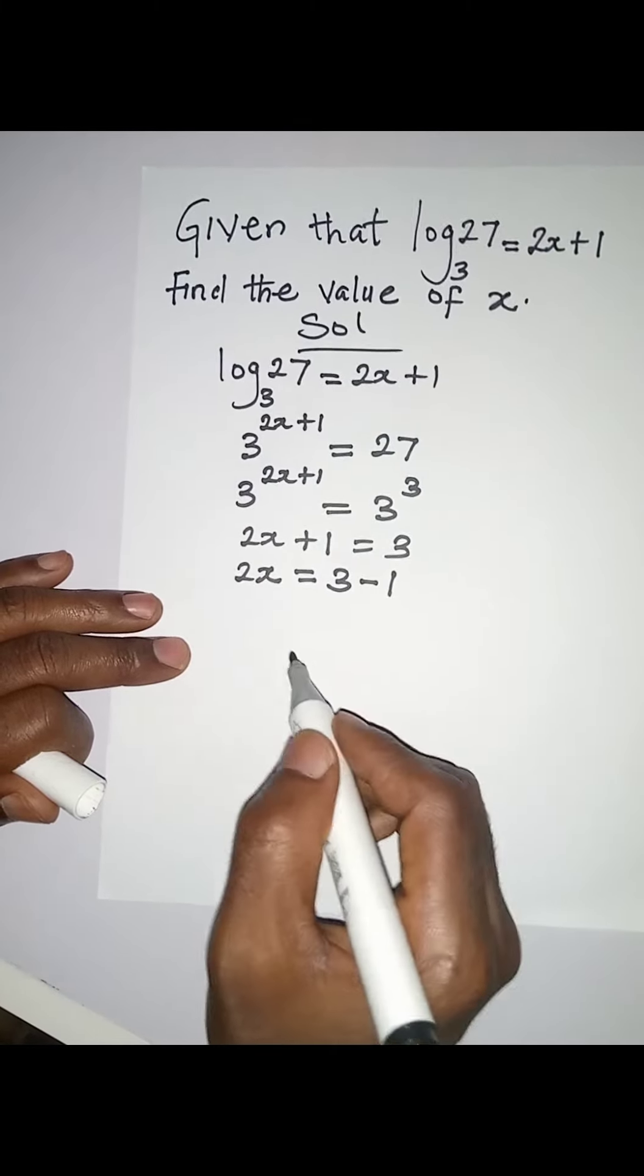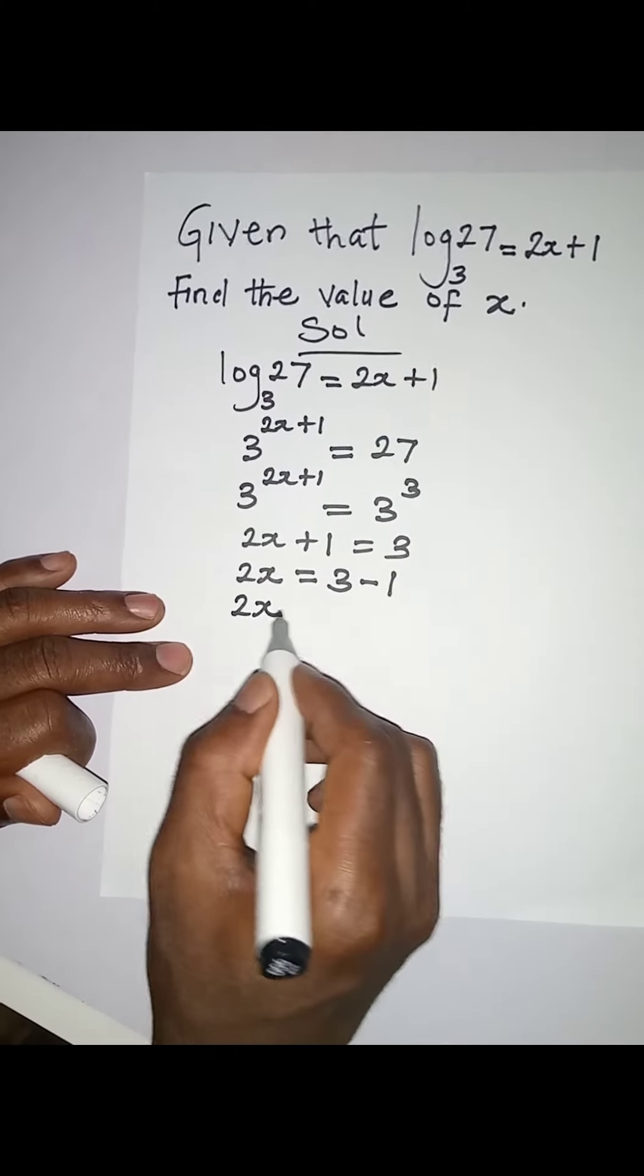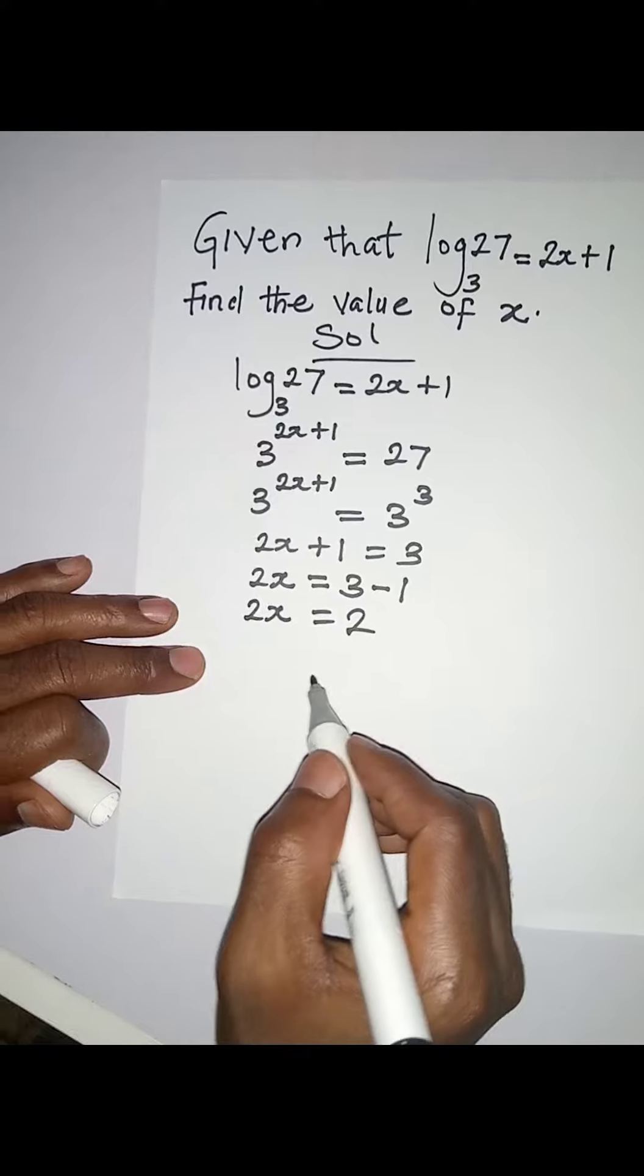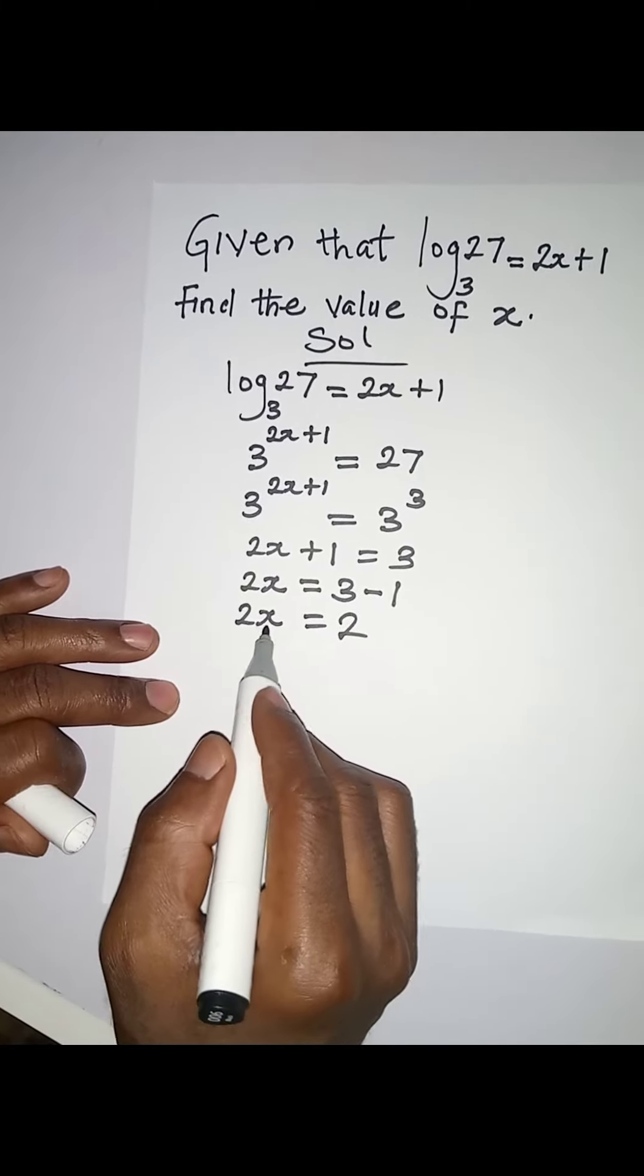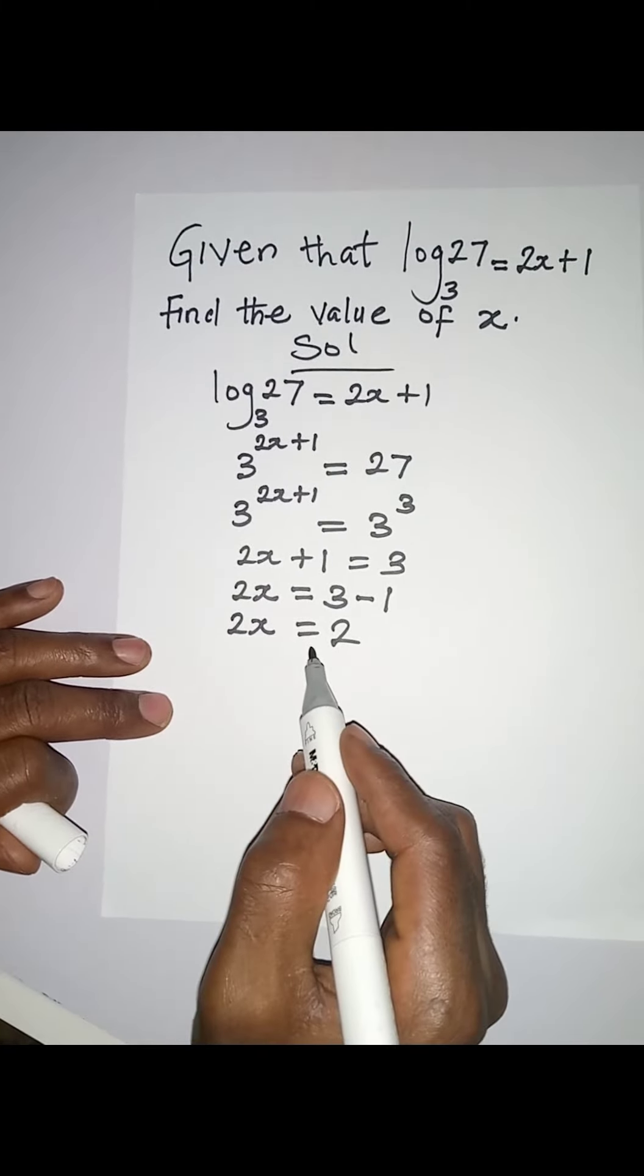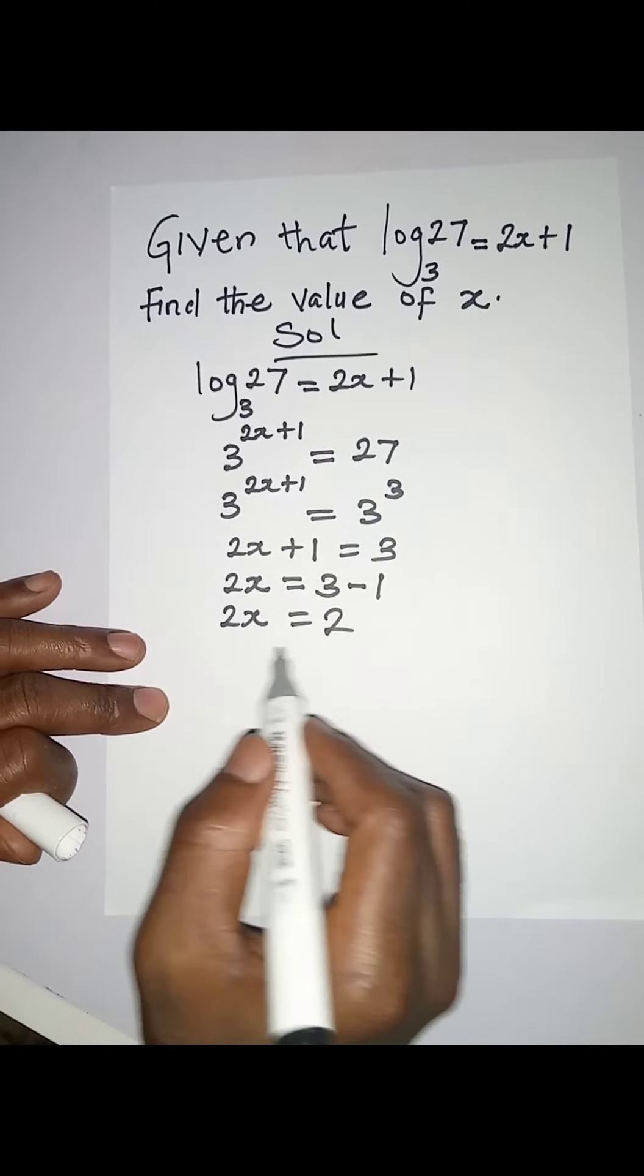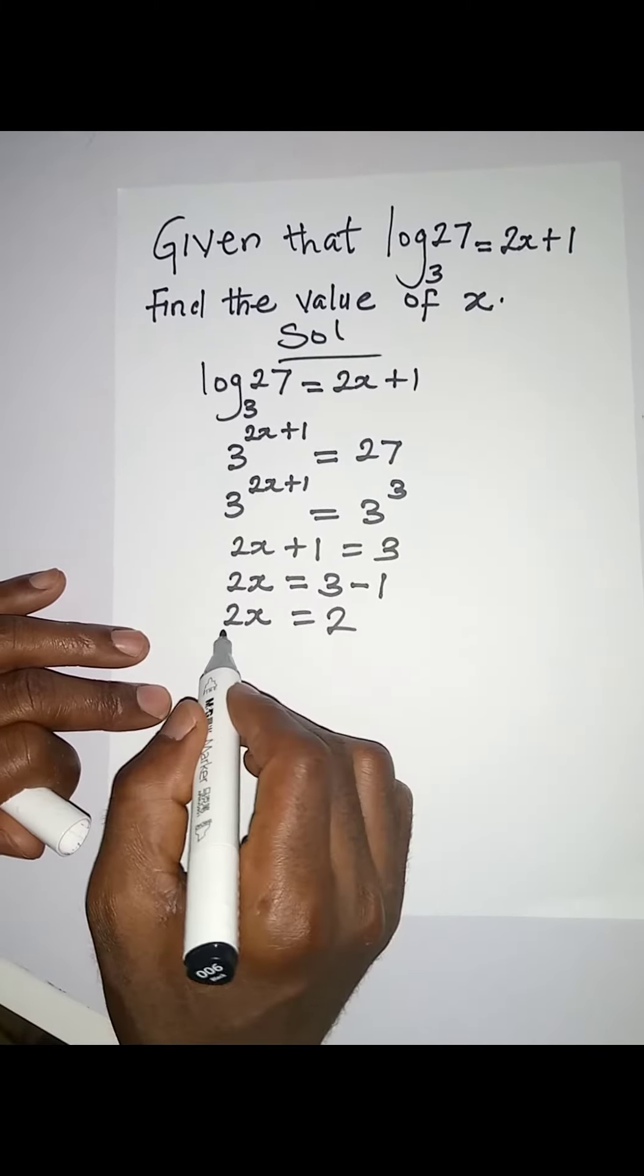And then to get the value of x, we are simply going to divide both sides by 2, which is the coefficient of x. Divide by 2, then divide this by 2.